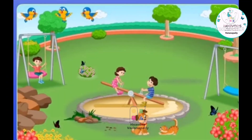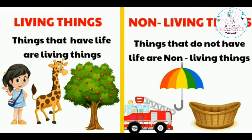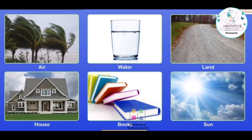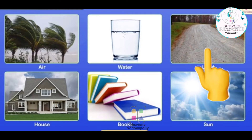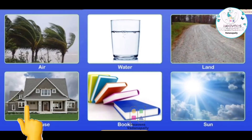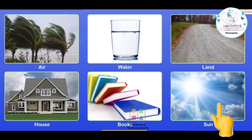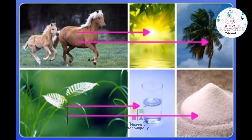All natural things that we see around us are either living or non-living. Animals, plants, and humans are examples of living things. While the air you breathe, the water you drink, the land on which you walk, the house in which you live, the book which you read, and the sun that lights your day are all examples of non-living things. Living things depend on non-living things for their survival and growth.